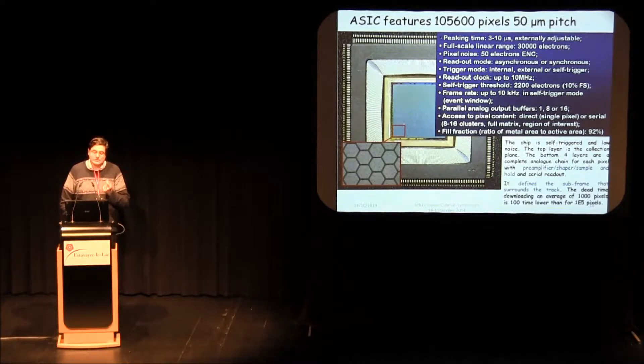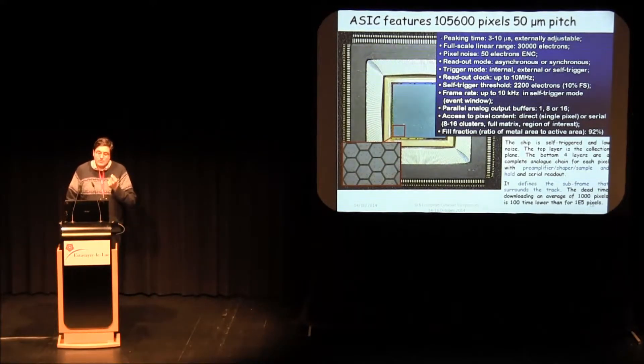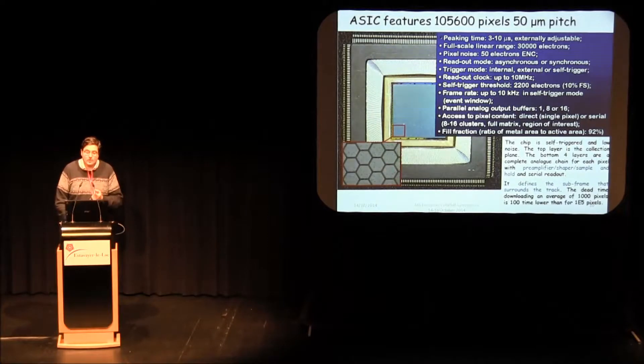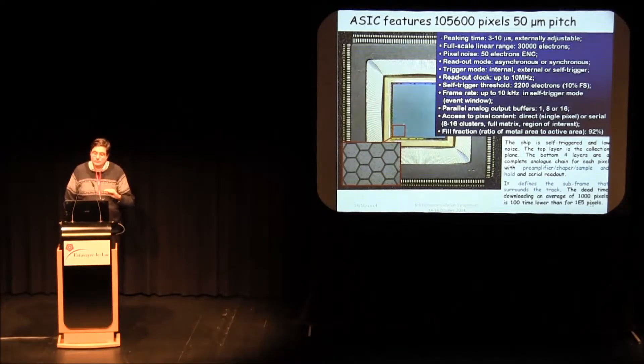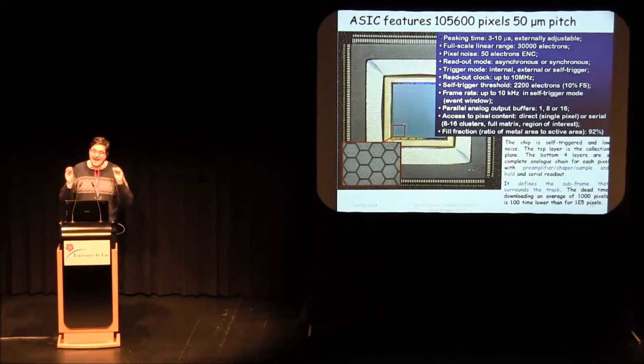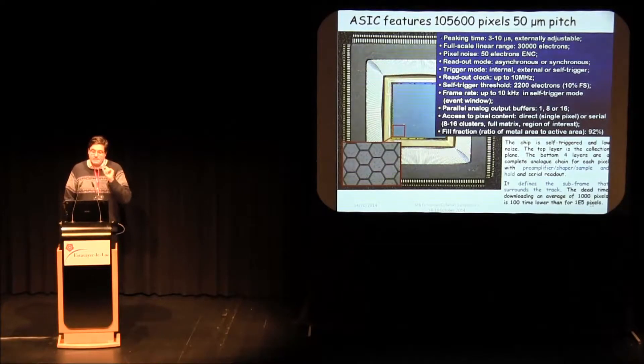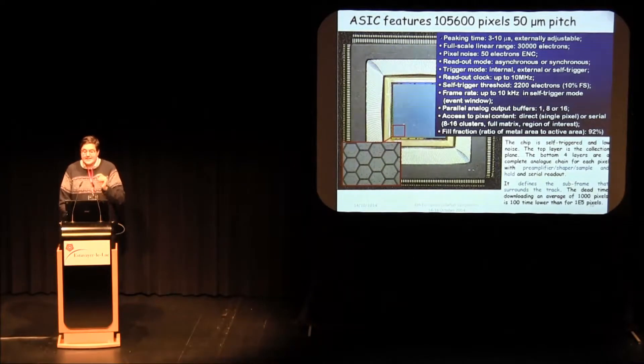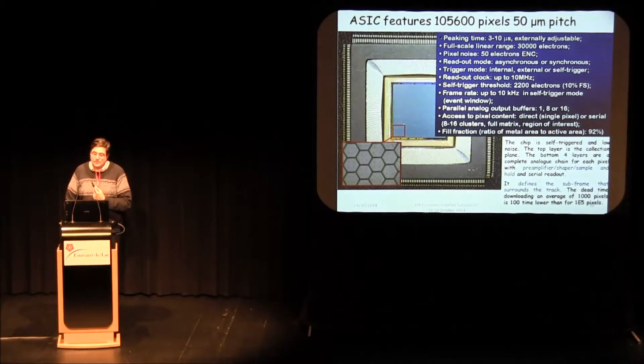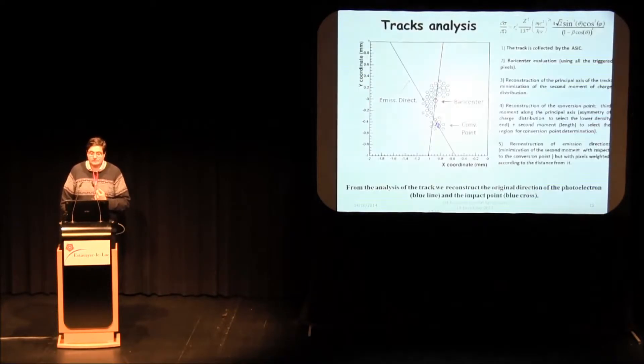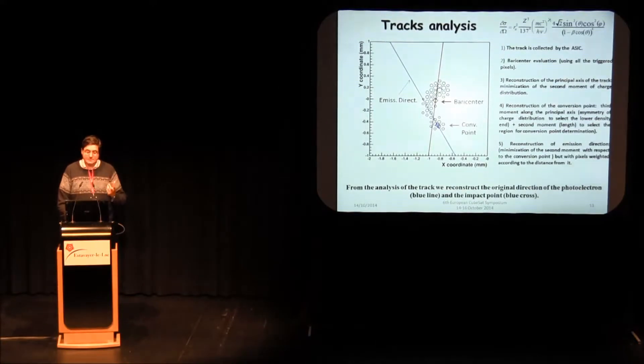Underneath each hexagon there is a complete analog chain with preamplifier, shaper, and threshold windows, and there is a serial output. Not all the 100,000 pixels are downloaded for each event, but since there are local triggers, the ASIC autonomously selects the region of interest that contains the track, and only the region of interest that contains the track is actually read out, so the dead time is much smaller than reading out all the pixels.